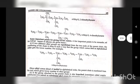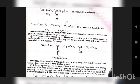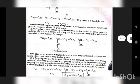Important points for IUPAC names: If two different alkyl groups are equidistant from the two ends of the parent chain, the numbering is done such that the group which comes first in alphabetical order gets the lowest number. For example, 3-ethyl-6-methyloctane — since ethyl comes before methyl alphabetically, the parent chain is numbered from the end which gives the lower number to the ethyl group.